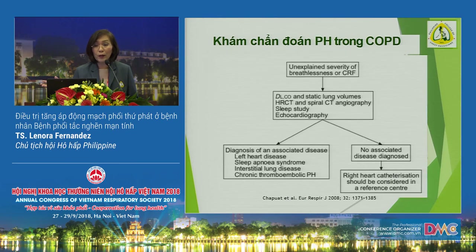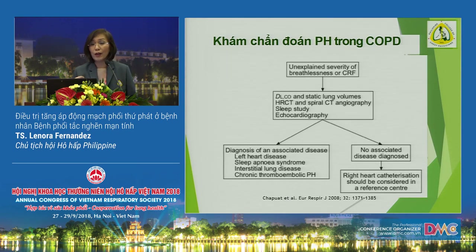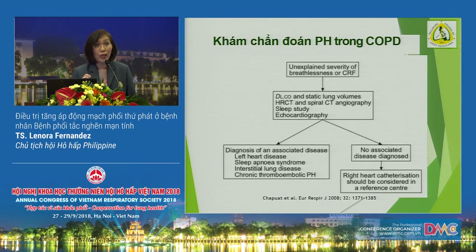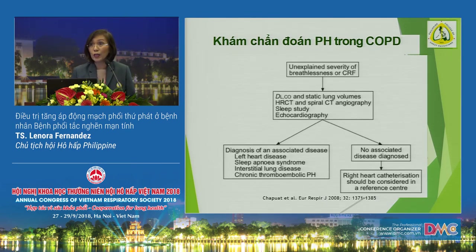How do we work up our patients with pulmonary hypertension in COPD? A diagnosed COPD patient with more shortness of breath than usual and signs of right-sided heart failure — first rule out left-sided heart failure, then rule out sleep apnea syndrome, interstitial lung disease, or pulmonary embolism and CTEPH. Once you've ruled those out, refer to an expert for right heart catheterization. If that's not possible, proceed with treatment.